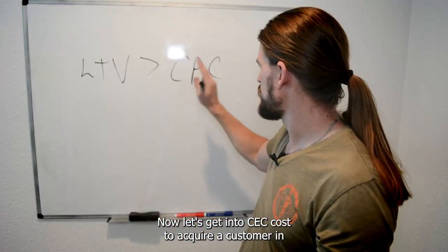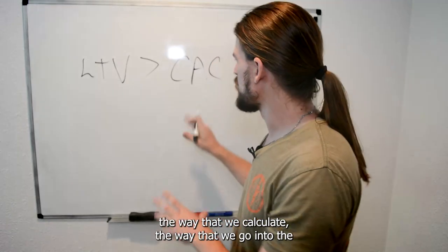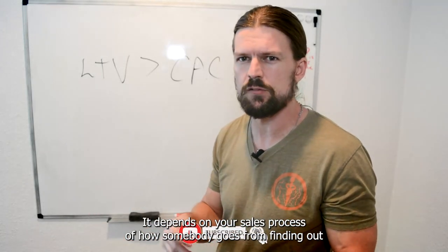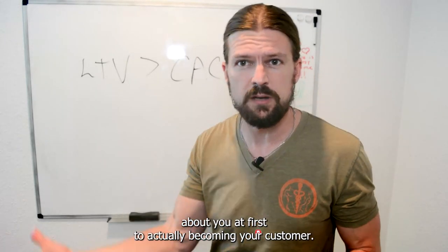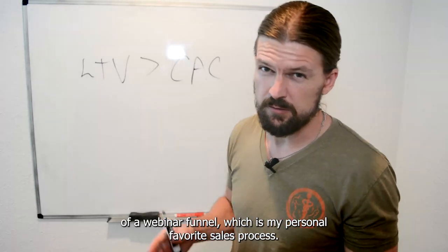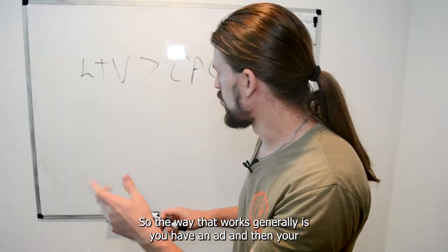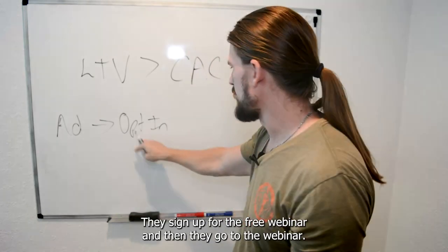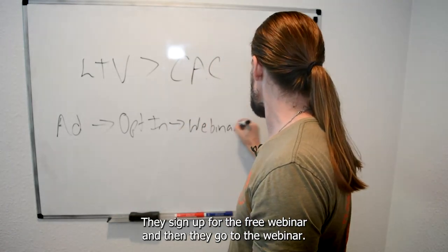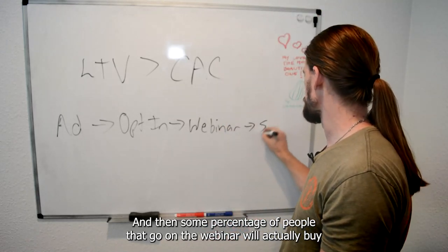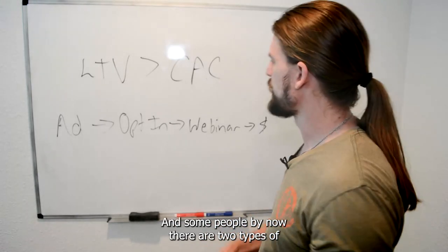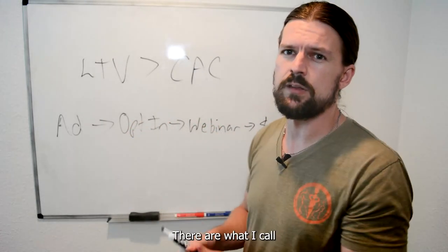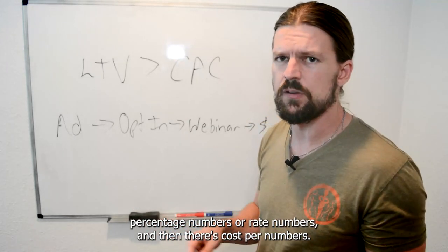Now let's get into CAC — cost to acquire a customer. How we calculate the lower-level numbers depends on the funnel — how somebody goes from finding out about you to actually becoming a customer. I'm going to use a webinar funnel as an example, which is my personal favorite. Generally: you run an ad, someone clicks, they go to an opt-in page, sign up for a free webinar, attend the webinar, and some percentage of people buy after you pitch your product at the end.